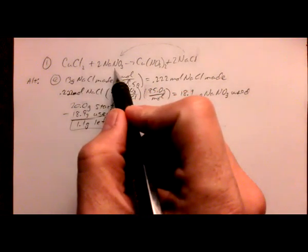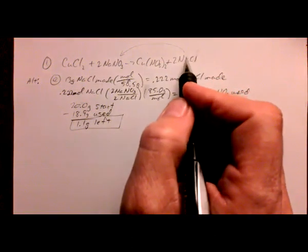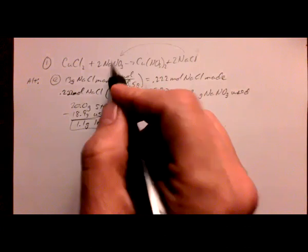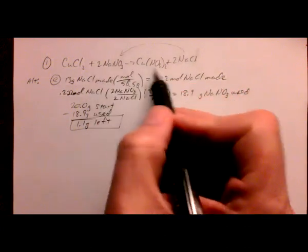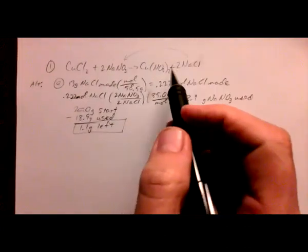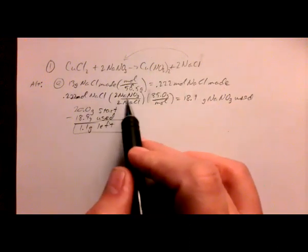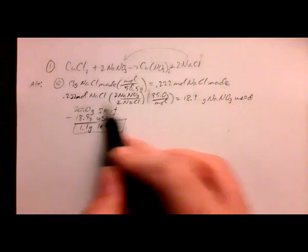So if I knew that I was going to make 17 moles of this, I would have been using 17 moles of that, because the ratio is two to two. So it turns out I will have made 0.22 moles of this, which by the ratio of two to two means I will have used 0.22 moles of this.